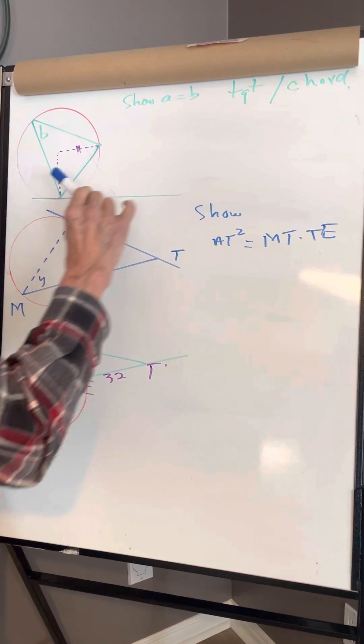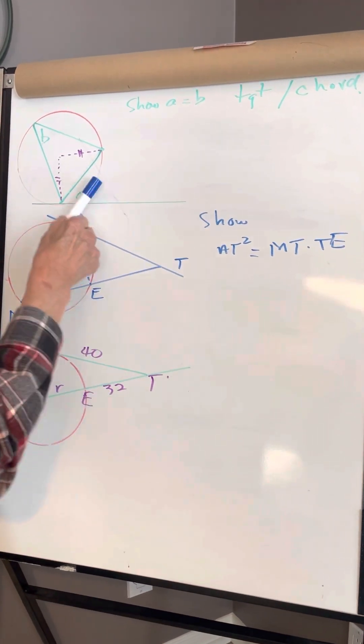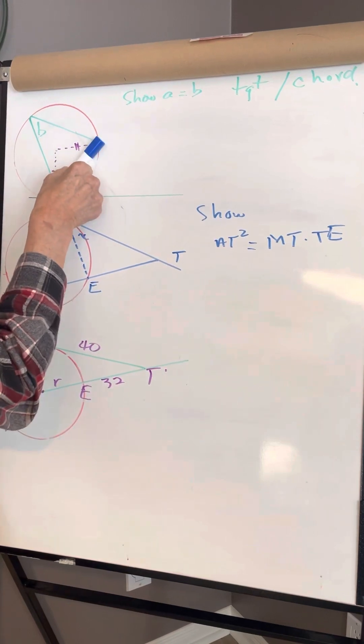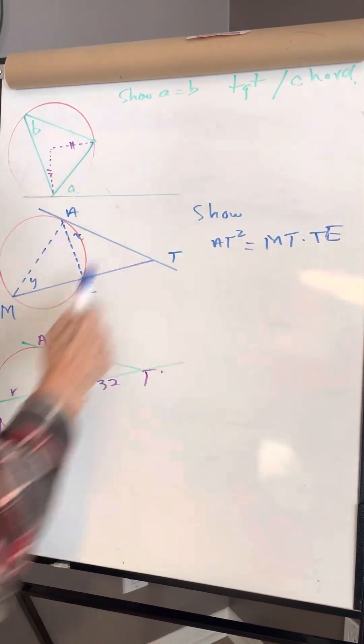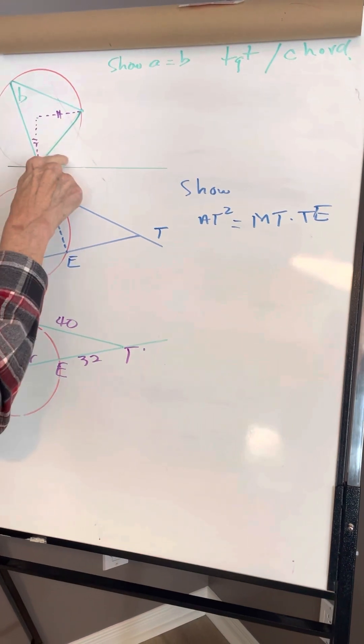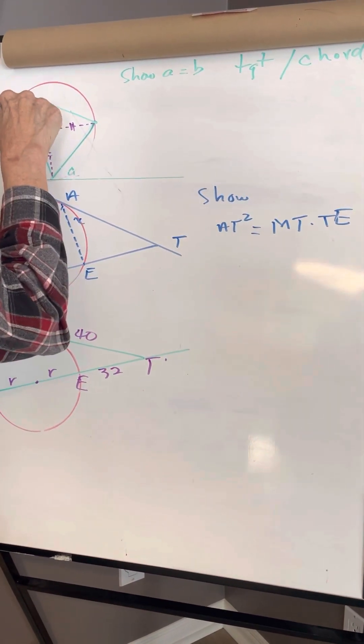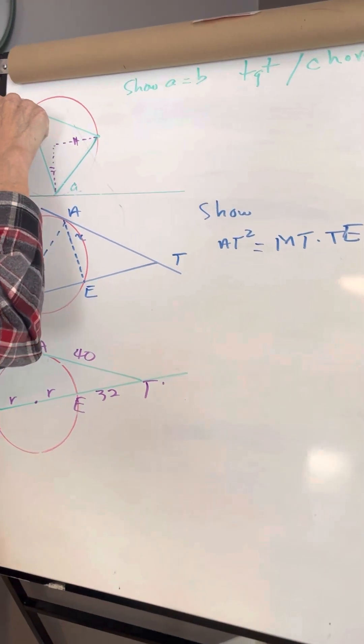First of all, this is the tangent and the chord, so it's called the tangent-chord theorem. We want to show that the angle between the tangent and the chord is equal to the inscribed angle which is on the circle.